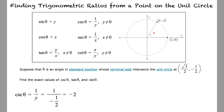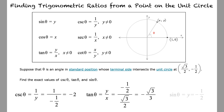Perform the same substitutions for the next two ratios. Tangent represents y over x, yielding (-1/2) over (√3/2), which results in negative √3 over 3. Lastly, the sine of theta is equal to the y-coordinate, yielding negative one-half.